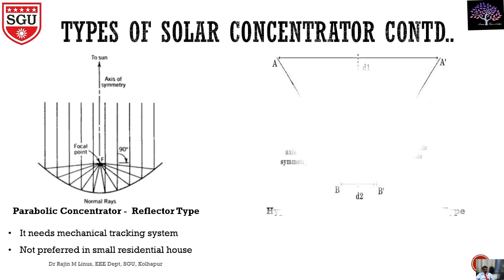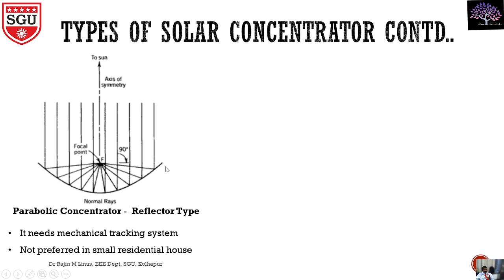The parabolic concentrator has that parabolic structure we have already seen in the previous slide. It looks like a dish type and it is the reflector type. Light will pass here and be focused to this focal point. Here we will connect the PV system. Light is passing and reflecting towards the focal point — that is why this is called the reflector type.